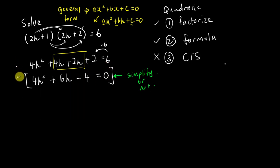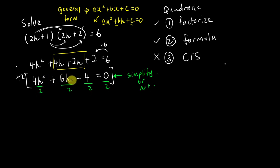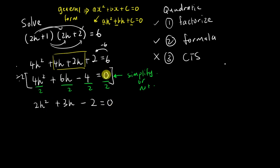Dividing every term by 2: I divide 2 here, divide 2 here, divide 2 here, and divide 2 here. I considered dividing by 4, but 6 divided by 4 is not an integer — I always prefer integers. After dividing by 2, I get 2h² + 3h − 2 = 0, since 0 divided by 2 is still 0.